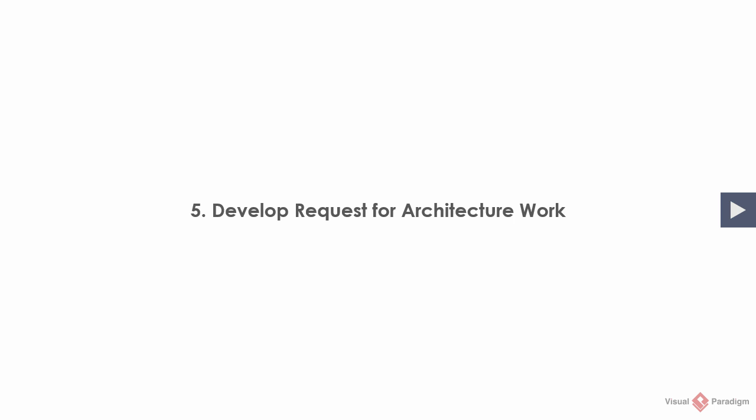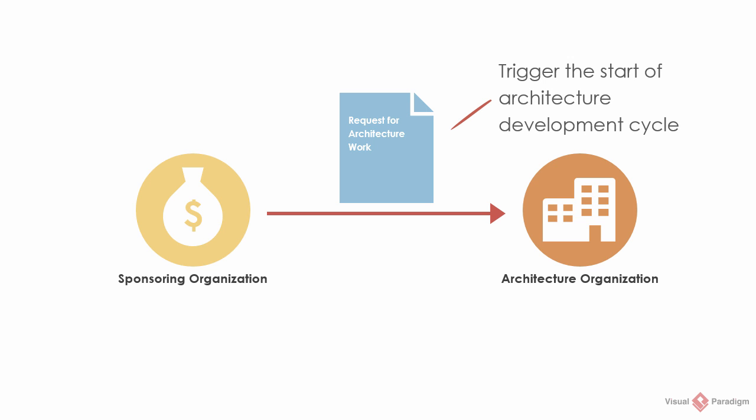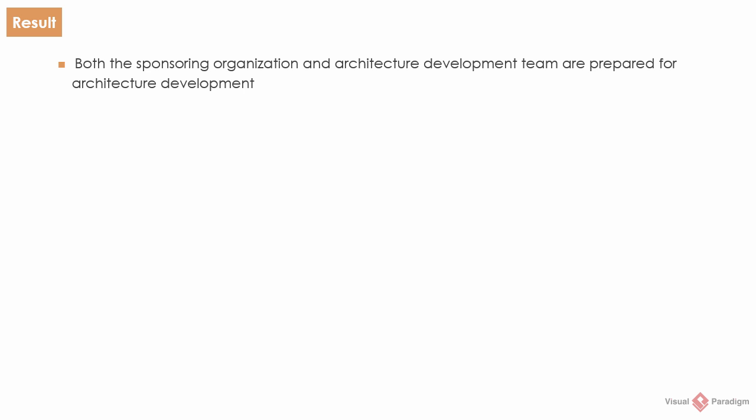Activity 5: Develop the request for architecture work. The request for architecture work is a document sent from the sponsoring organization to the architecture organization to trigger the start of an architecture development cycle. In this phase, you must complete this document in order to start subsequent architecture development activities. The primary objective of the Preliminary Phase is to prepare for the architecture development activities, so once you've finished this phase, both the sponsoring organization and architecture development team should be prepared.